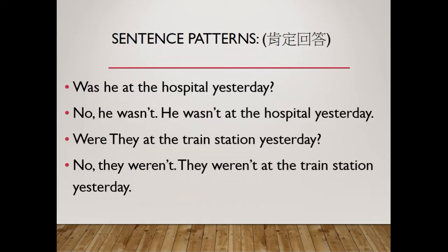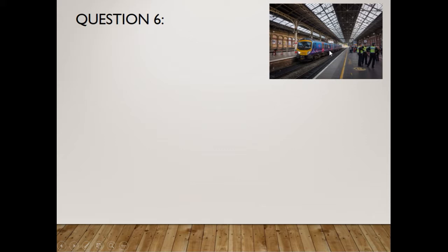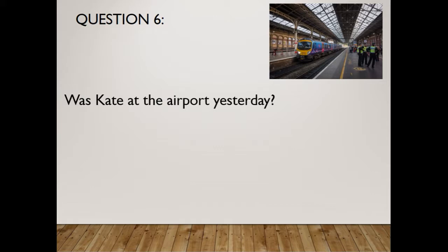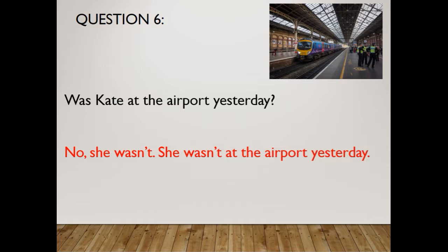Question six: This is a train station. The question is, 'Was Kate at the airport yesterday?' This is not an airport — it's a train station. So the answer is: 'No, she wasn't. She wasn't at the airport yesterday.'